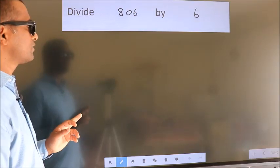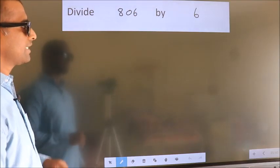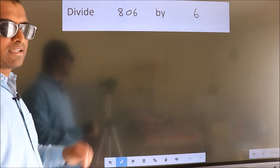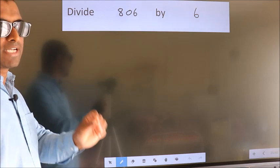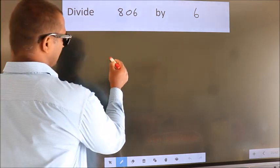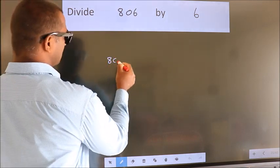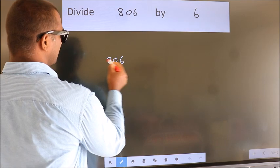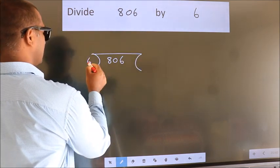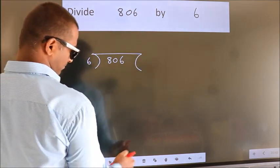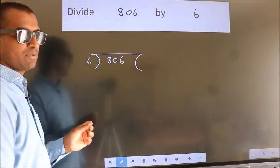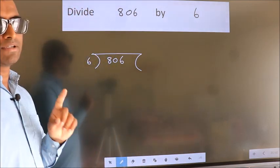Divide 806 by 6. To do this division, we should frame it in this way: 806 here, 6 here. This is your step 1.